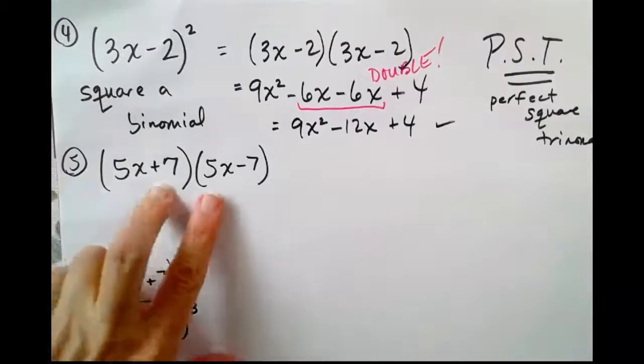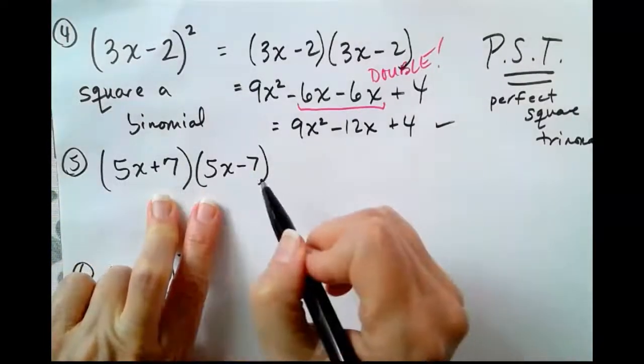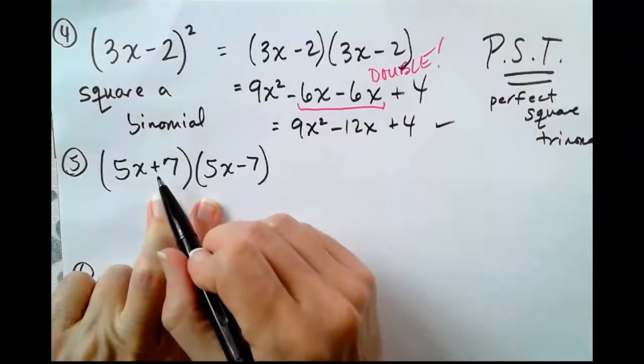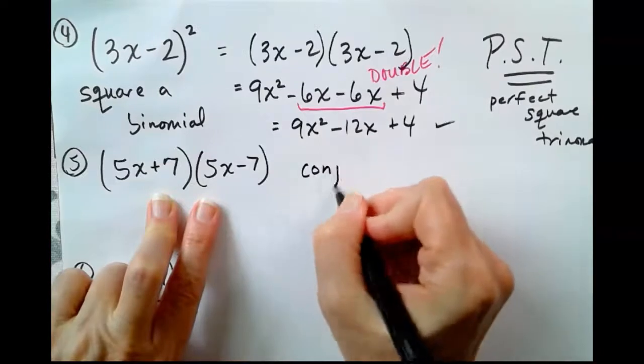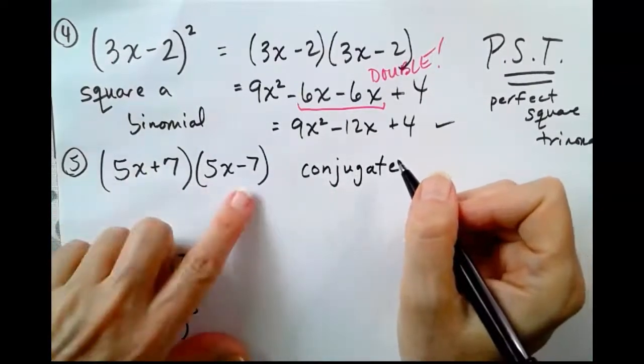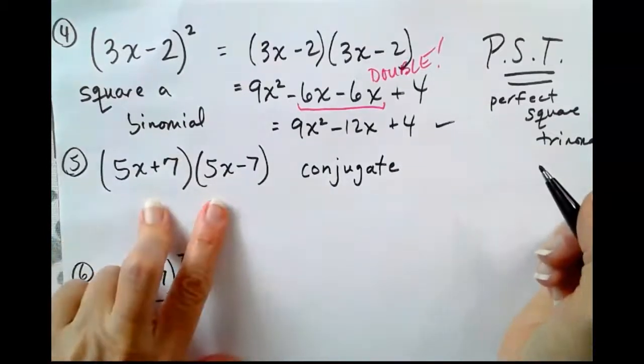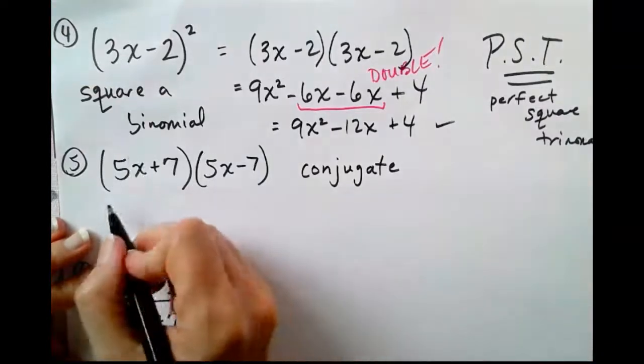Number 5. Hopefully, you're remembering what conjugates look like. We have a binomial times its conjugate. Remember that's spelled C-O-N-J-U-G-A-T-E. One's a sum, one's a difference. And when we multiply conjugates together, our middle terms will cancel.